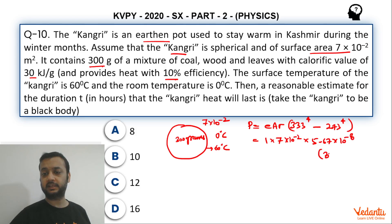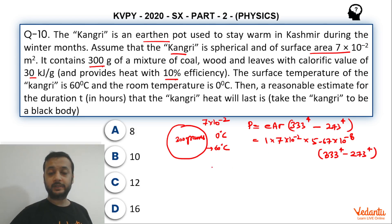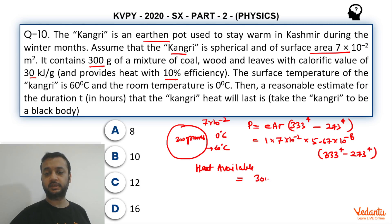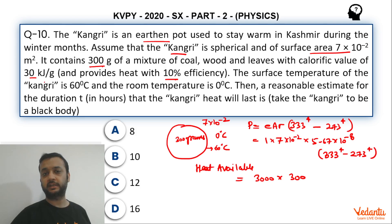Using σ = 5.67 × 10⁻⁸, the net power loss is: P = 1 × 5.67 × 10⁻⁸ × 7 × 10⁻² × (333⁴ − 273⁴). The total heat available is calculated as: effective calorific value = 3000 J/g × 300 g total mass, giving the total heat available in joules.